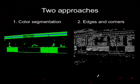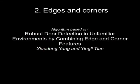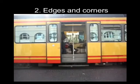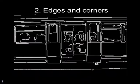Next I will explain the geometric detection approach. The doors are detected by the edges and corners in the image. This algorithm is described in the paper 'Robust Door Detection in Unfamiliar Environments by Combining Edge and Corner Features' by Xiaodong Yang and Jing Lixian. The first step is to detect the edges in the image.